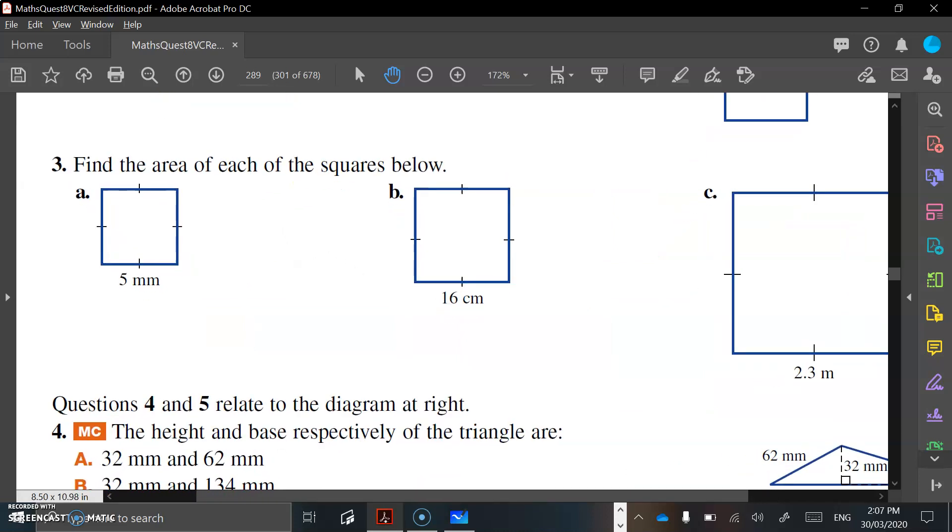So the first one here, we've got a square. That side is 5, that side is 5, and to get the area of a square is basically L squared. So 5 times 5 is going to give you 25 millimeters squared. So 25 millimeters squared is your area for that shape.